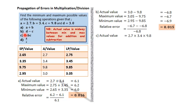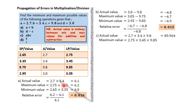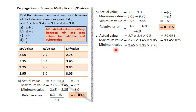Part C: a times b times c. The actual value is 2.7 × 3.4 × 9.8 = 89.964. For the maximum value, similar to addition, we use the bigger values: 2.75 × 3.45 × 9.85. For the minimum value, we use the smaller values: 2.65 × 3.35 × 9.75 = 866.555625.